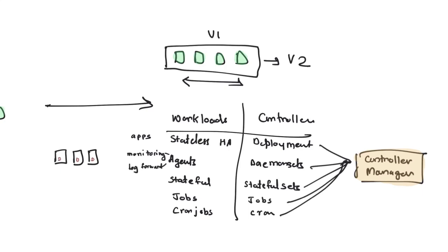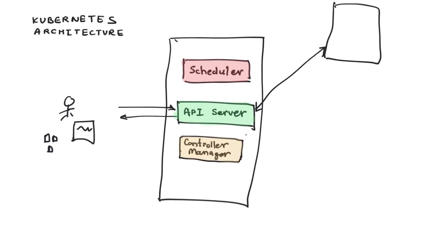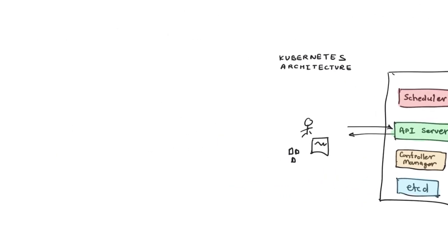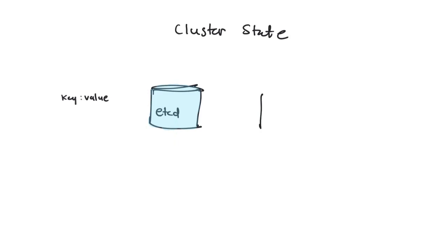Even though there are different controllers, all of them are compiled into one single binary — the controller manager component running on the Kubernetes master. We talked about the API server, the scheduler, and the controller manager. Now we're going to look at one of the most important components of Kubernetes — the etcd. It's not really the brain; it's more like storage. The intelligence is provided by controllers and schedulers, but the state of the cluster is stored in this database.